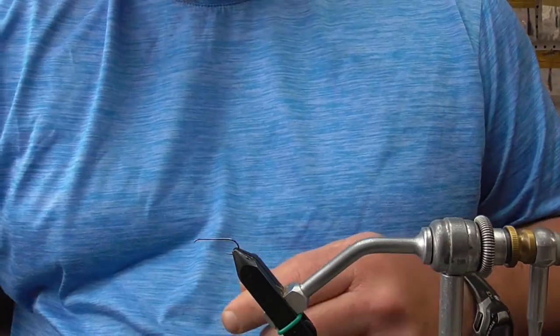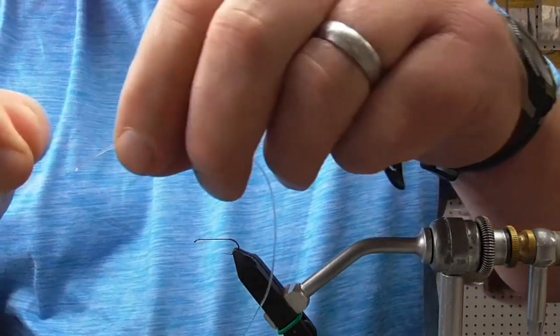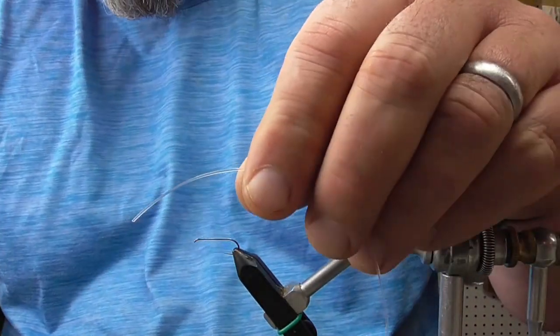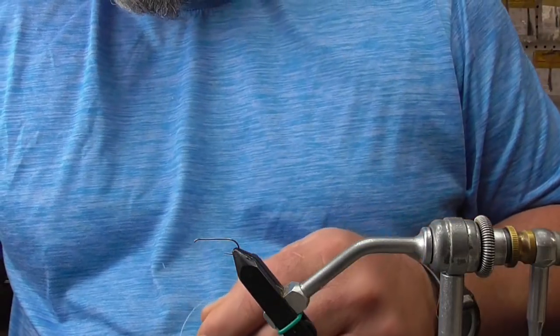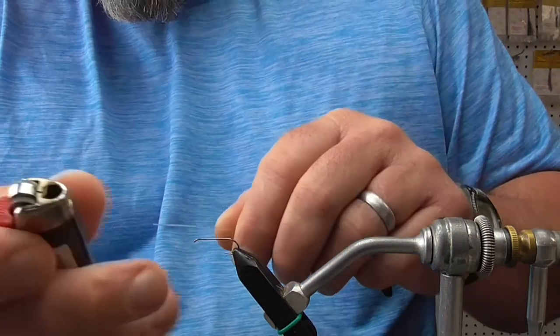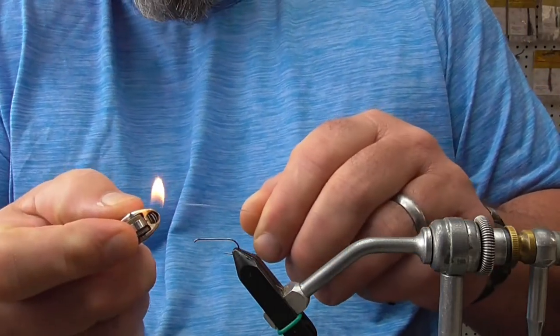So what we're going to do first is I've got a piece of 50-pound monofilament right here, and I'm going to get a lighter and we're going to burn this end.